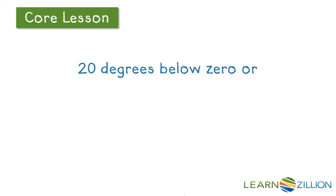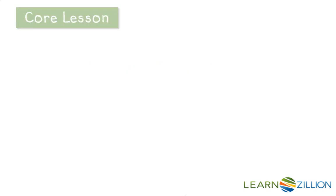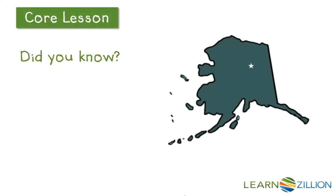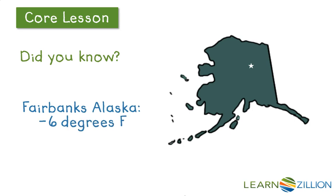If we were to write 20 degrees below 0, we can write it like that, or we can just write negative 20 degrees. If we're using the negative, we would not use the words below 0. Did you know that in Fairbanks, Alaska, the average daily temperature in winter is negative 6 degrees Fahrenheit?